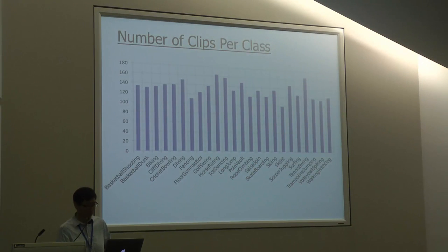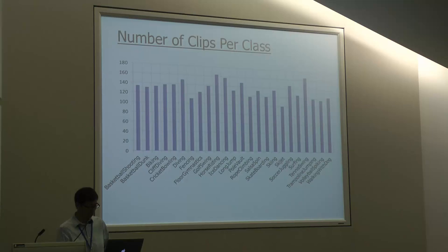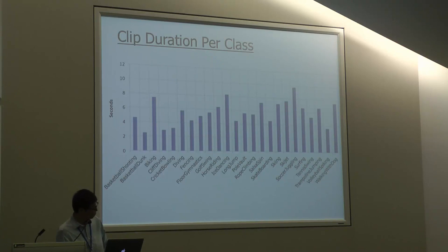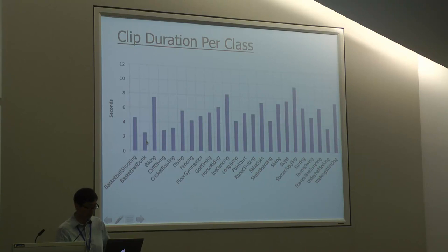Here is some more statistics of the dataset. This shows the number of clips per class for the 24 classes used in the detection challenge — around 120 clips per class. This figure shows the clip duration for those 24 classes, which overlaps a little with information given this morning. For some classes like soccer juggling it's a bit longer, around 10 seconds. Some are very short, like basketball dunking at just over two seconds.